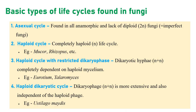We'll start with the basic types of life cycles found in fungi. There are plenty of fungi, which we divide into Oomycota, Zygomycota, Ascomycota, and Basidiomycota. Oomycota and Zygomycota are lower fungi, while Basidiomycota are higher fungi. Different types of life cycles are found across these groups.